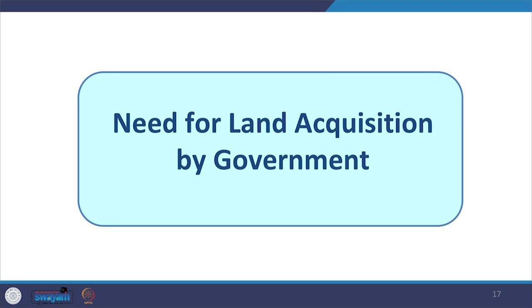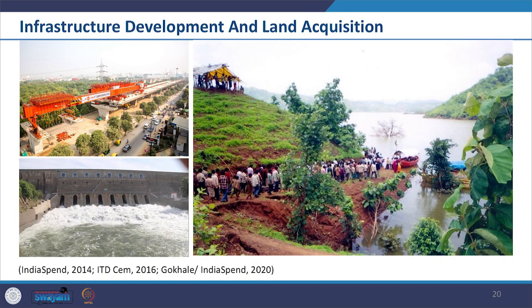Let us see why land is acquired by the government. Looking at the Indian landscape, most of the land is under agriculture and is occupied. The government, in order to carry out developmental work like construction of roads, industries, universities, dams, flyovers, bridges, housing, mines and so on, requires vast expanses of land. Since land is a limited resource, in order to carry out development work, the government has to acquire land, thereby depriving the existing occupants from its use. This leads to large-scale displacement and forced transfer of people from their land.